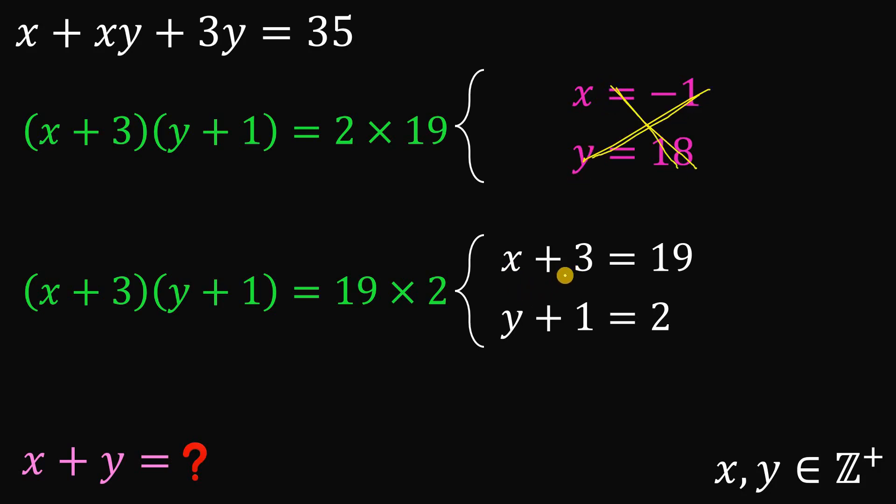Now, how about the last case? To solve for the value of x, let's subtract 3 on both sides. And 19 minus 3, this is just 16. This is good.